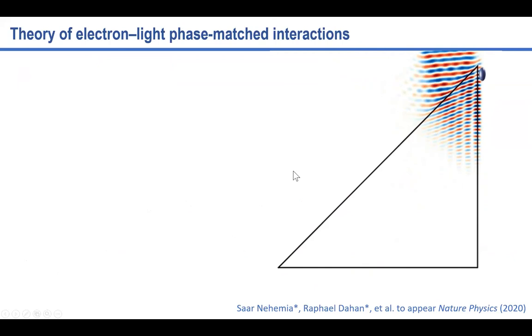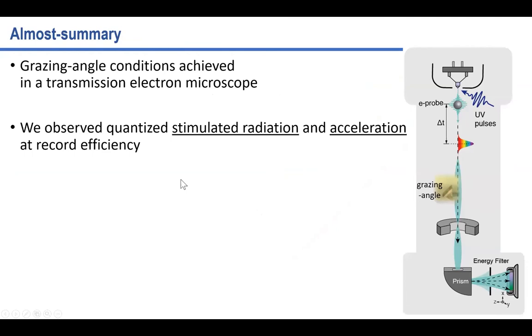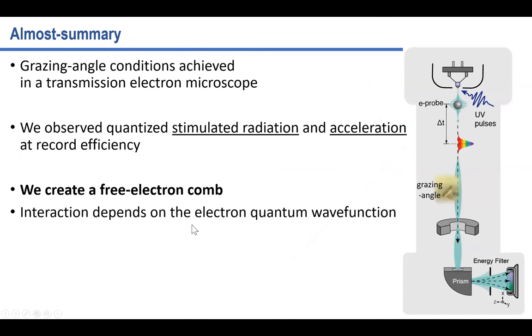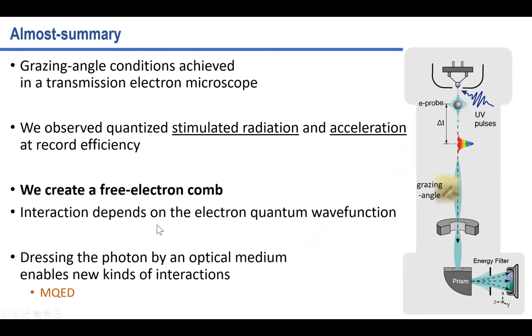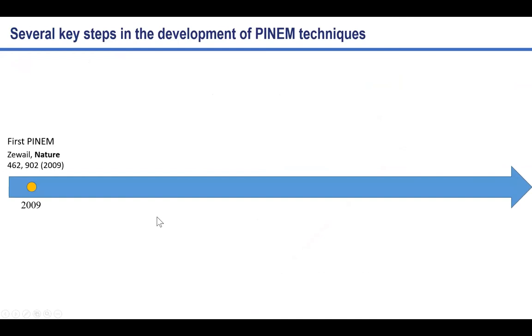And want to say that we achieved the grazing angle conditions here. This is something that was very important to us to get. And we see that the effect of quantized stimulated radiation and acceleration creating those free electron combs. It's a really interesting effect of fundamental physics, how the quantum wave function of the electron is playing a role in the interaction here. But I want to go to talk a little bit more about how we can use those kinds of interactions for microscopy. And for this, a quick historical comparison.